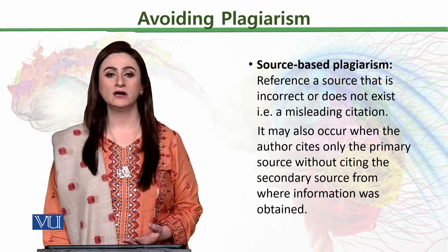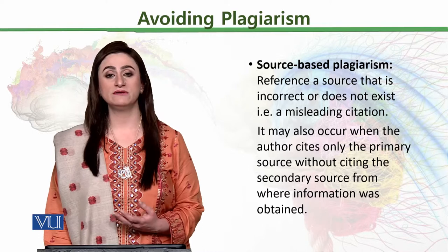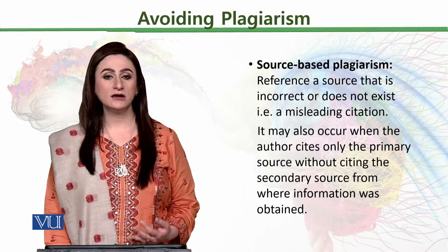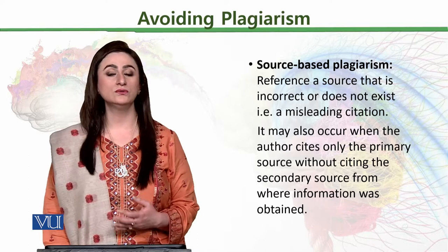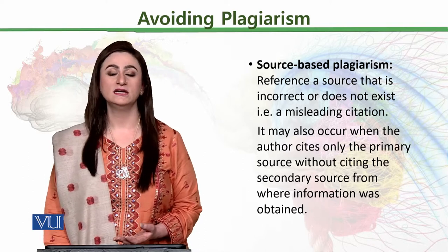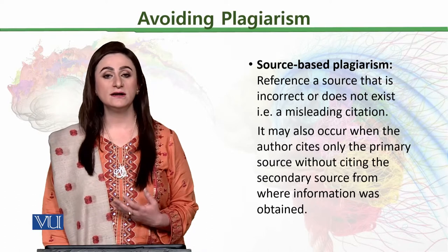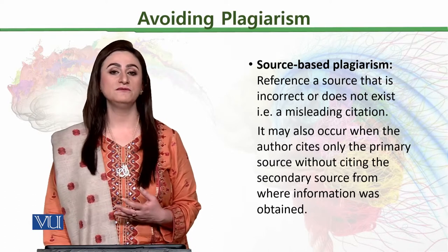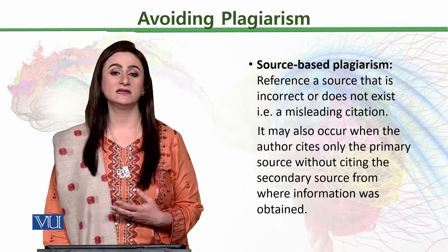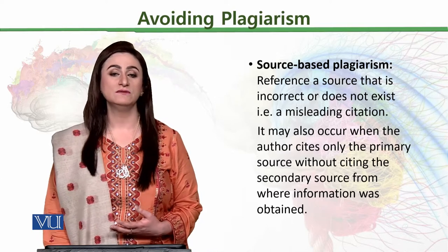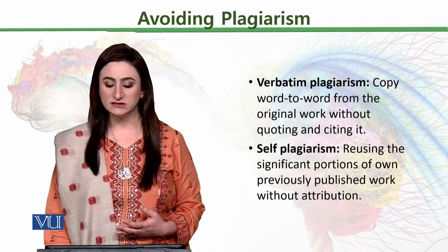उस article के reference list के अंदर 150-200 articles हैं जो सब emotional regulation पे हैं। अब आपने अपना काम करते हुए 4-5 references वहाँ से उठाके cite कर दिए और उनको originally आपने access नहीं किया। So there are high chances — in fact 100% chances — that the material for which you are citing them, just by looking at their names, is not correctly represented in those cited researches. So this is also source-based plagiarism.